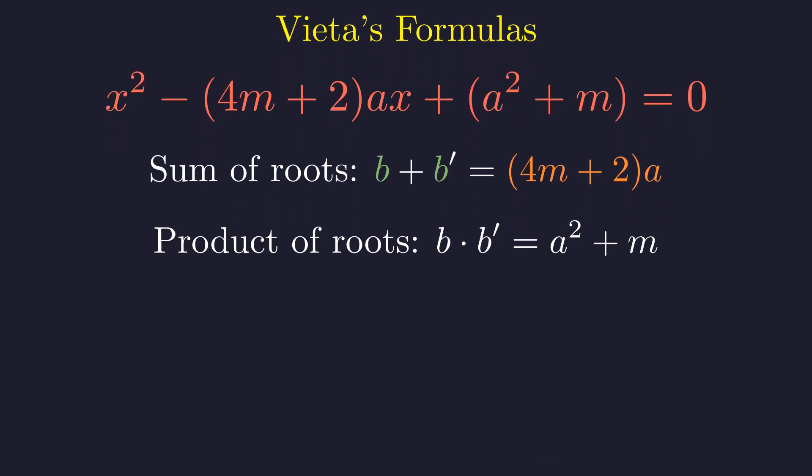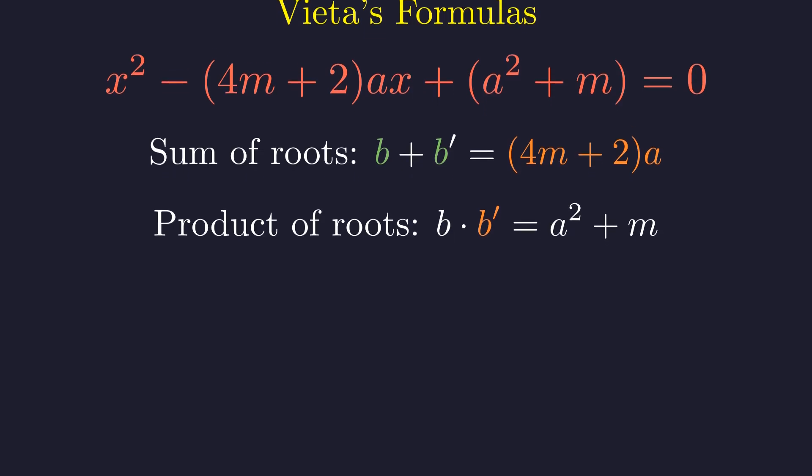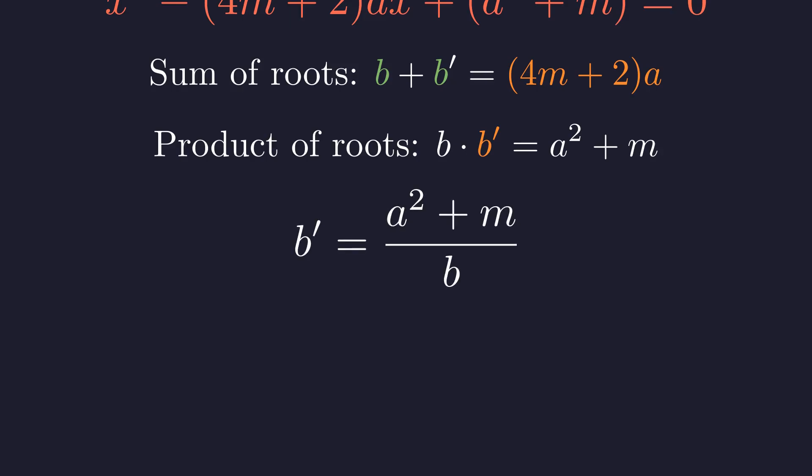The product of the roots is the constant term. Since A is a positive integer and we assumed M is a positive integer, the product A squared plus M is positive. As B is positive, B' must also be a positive integer. To analyze the magnitude of this new root, B', we can rearrange the product formula. Dividing by B provides an explicit formula for B'. We will now show that this new solution is strictly smaller than the original solution, which will form the basis of our contradiction.